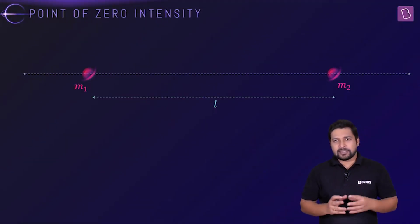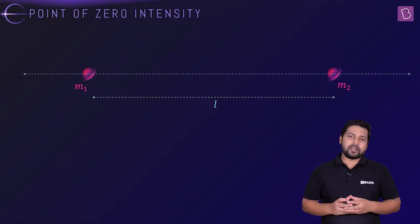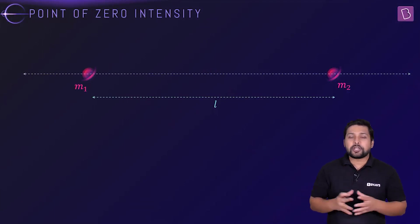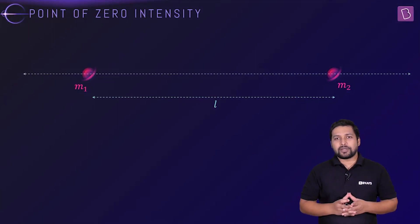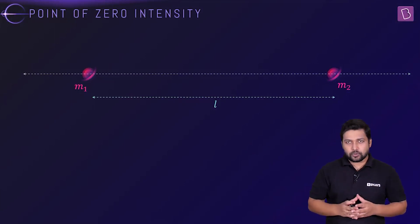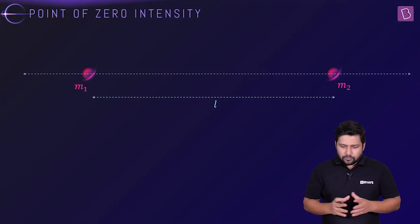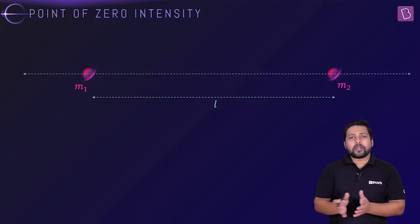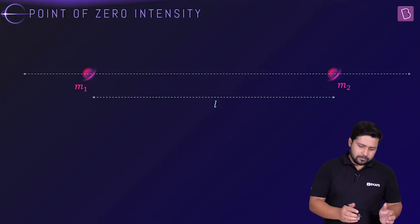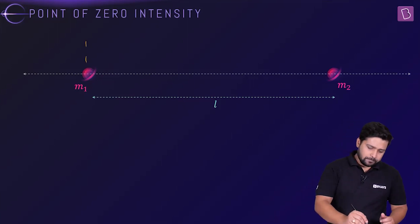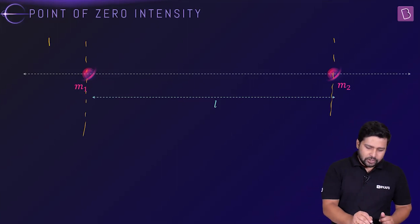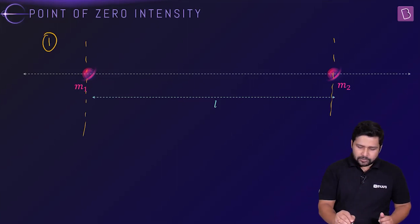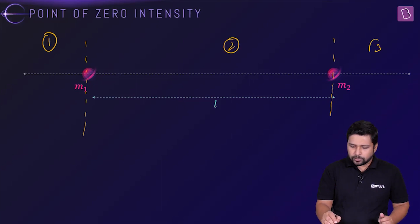If you have a system of two masses, M1 and M2, along the line joining the two masses, is there a chance that the net value of gravitational field intensity comes out to be equal to 0? The point can be anywhere. Let's say this is zone number 1, zone number 2, and zone number 3.